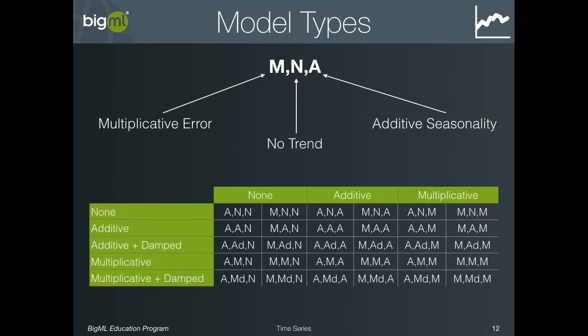To spare you from having to discover on your own which model best fits your data, BigML fits them all to your data, labeling each one with a three-part code. In the code, the first part refers to the error, the second to the trend, and the third to the seasonality. BigML then chooses the best model from among all of the fitted models, taking into account both how well the model fits the training data and how complex the model is, preferring models that fit well and are low complexity.